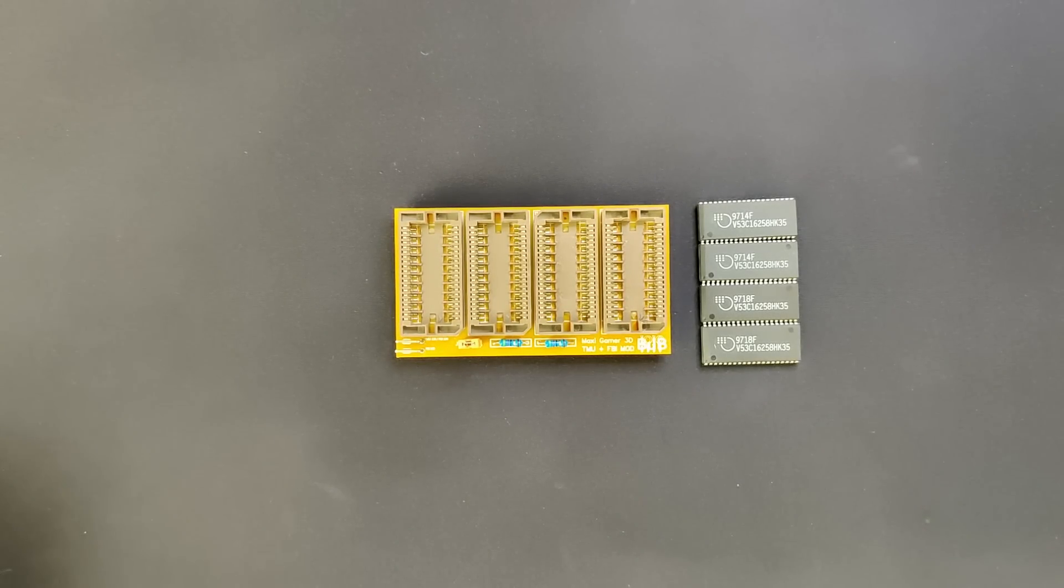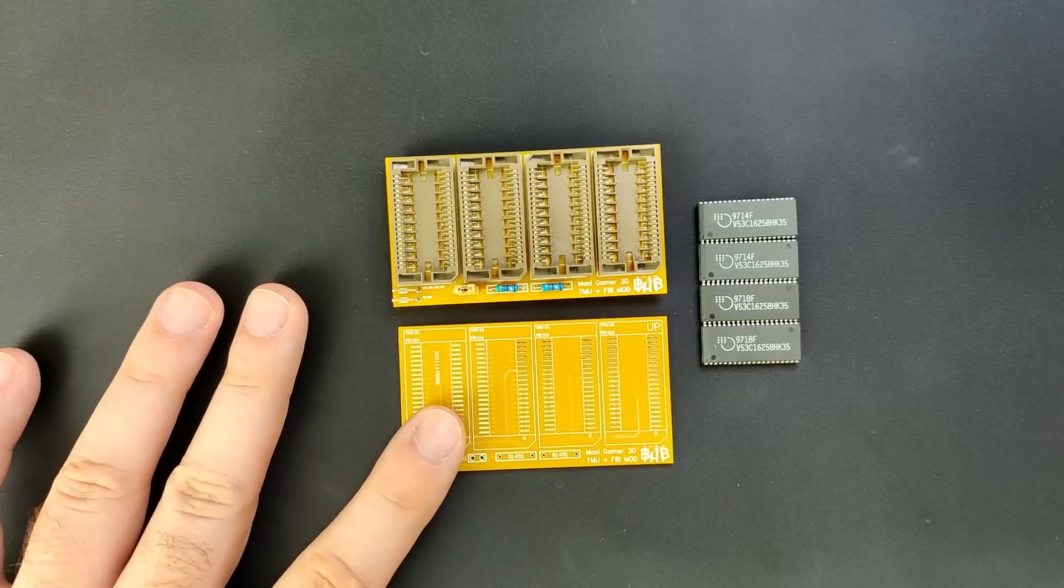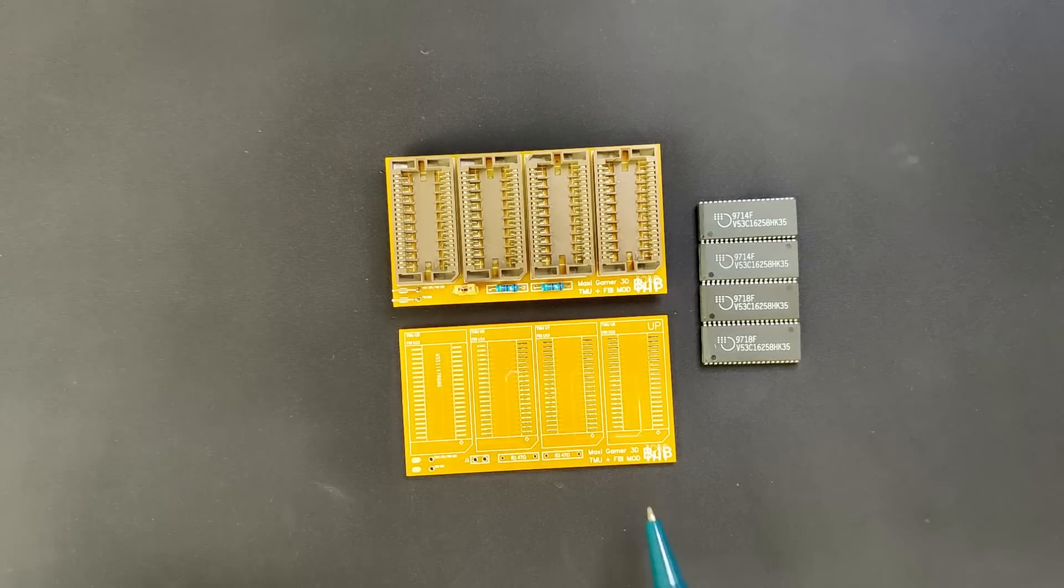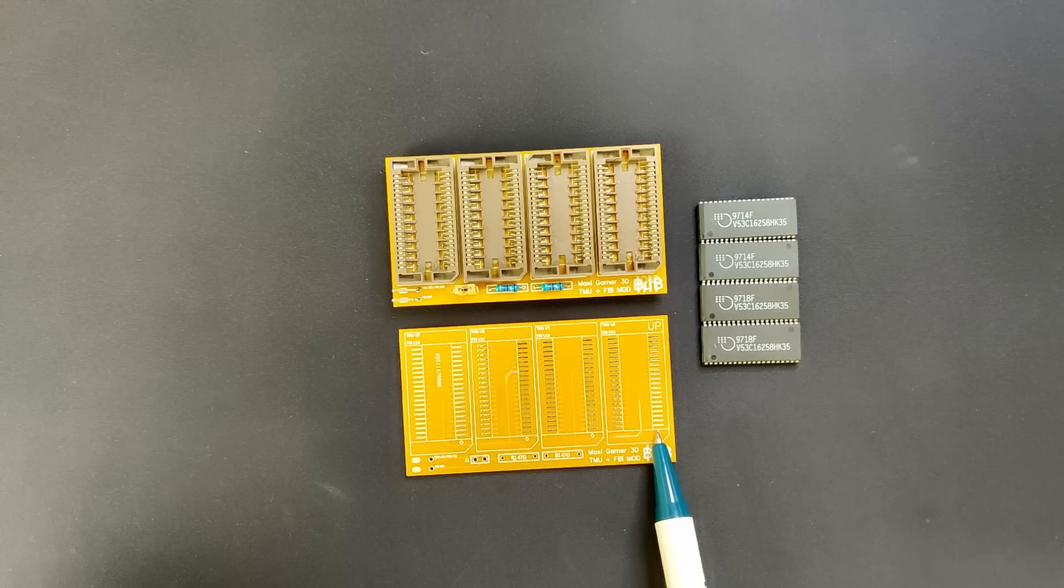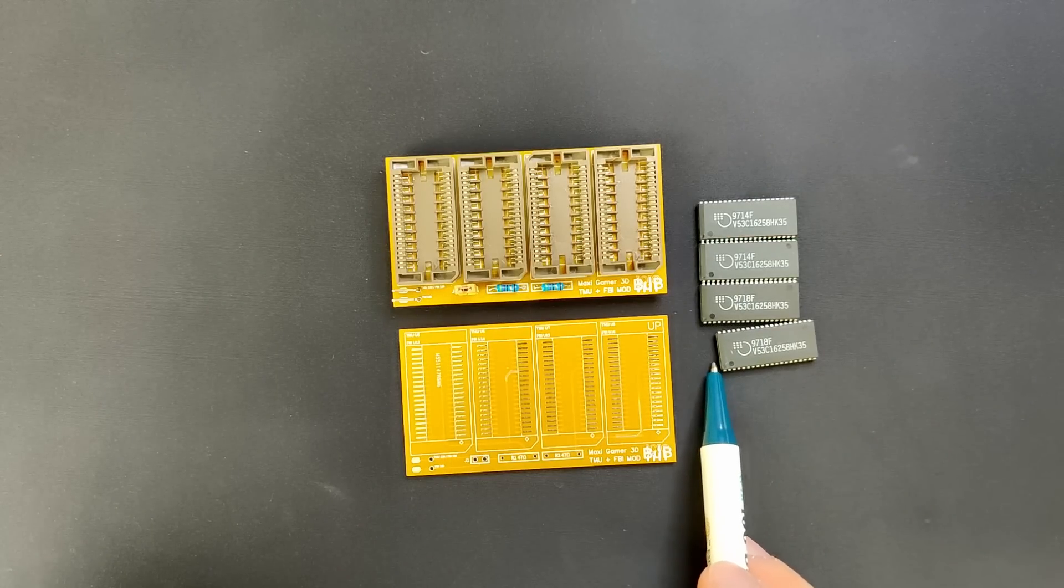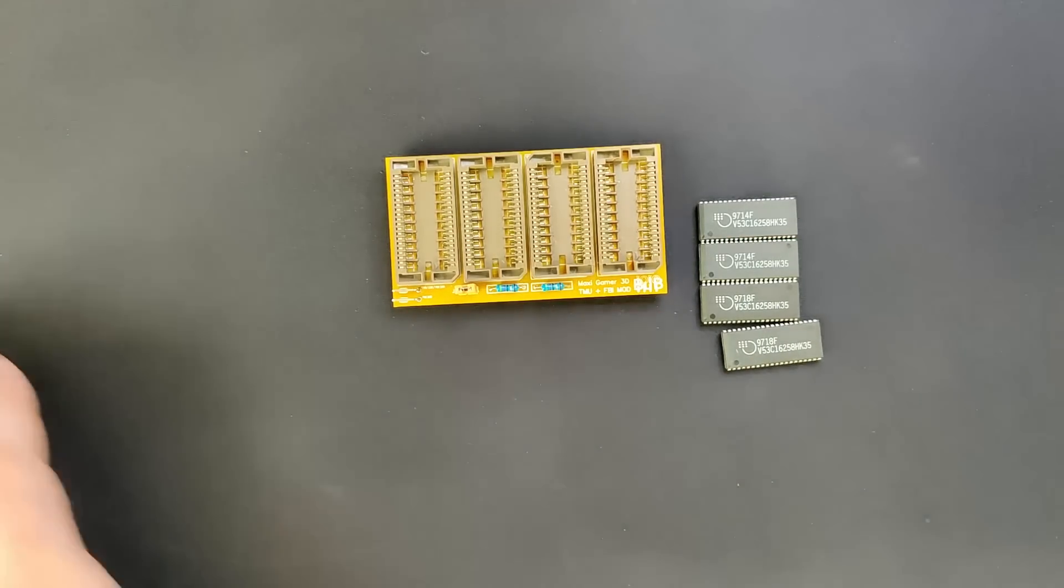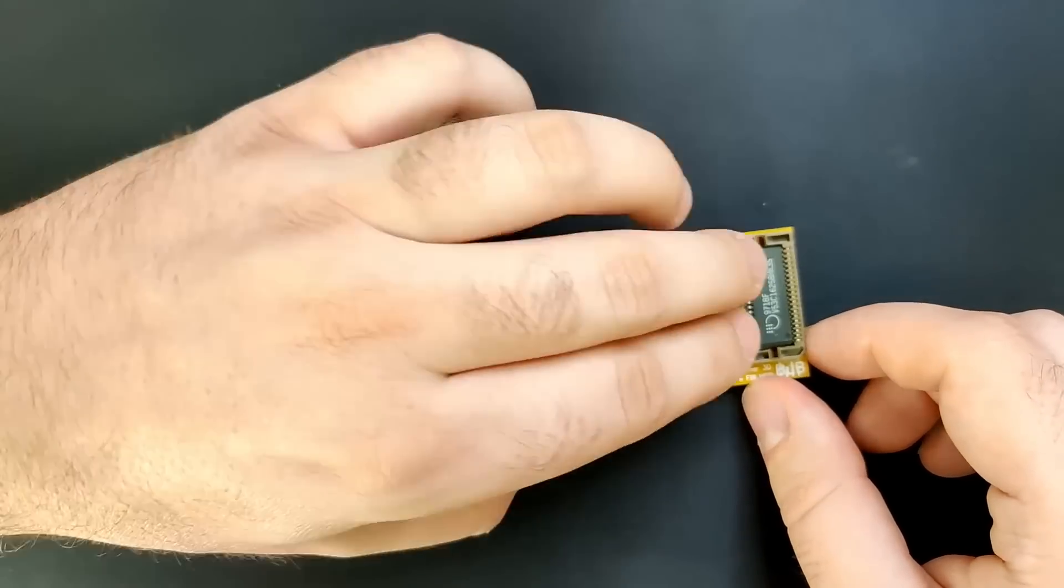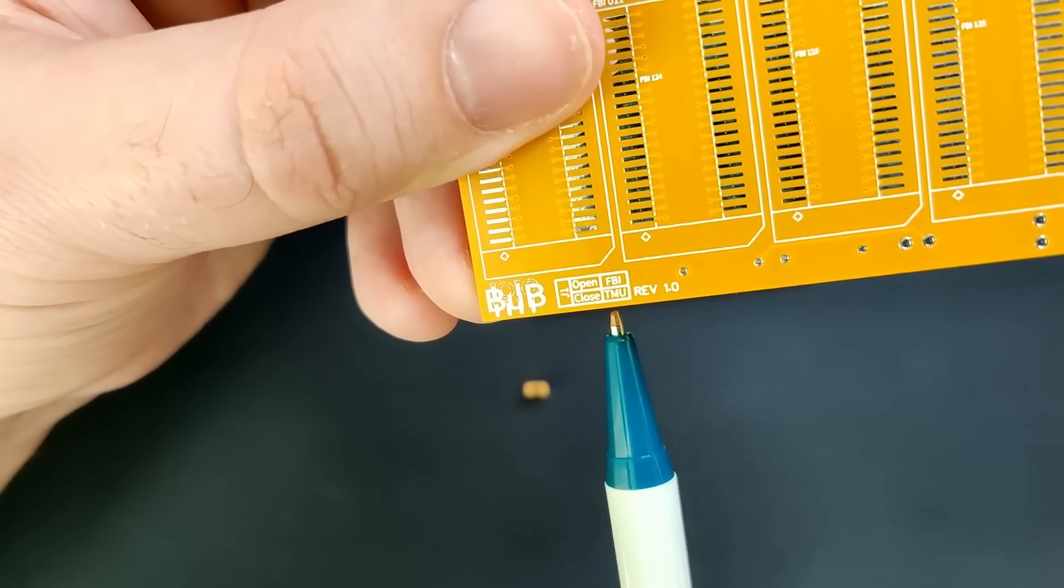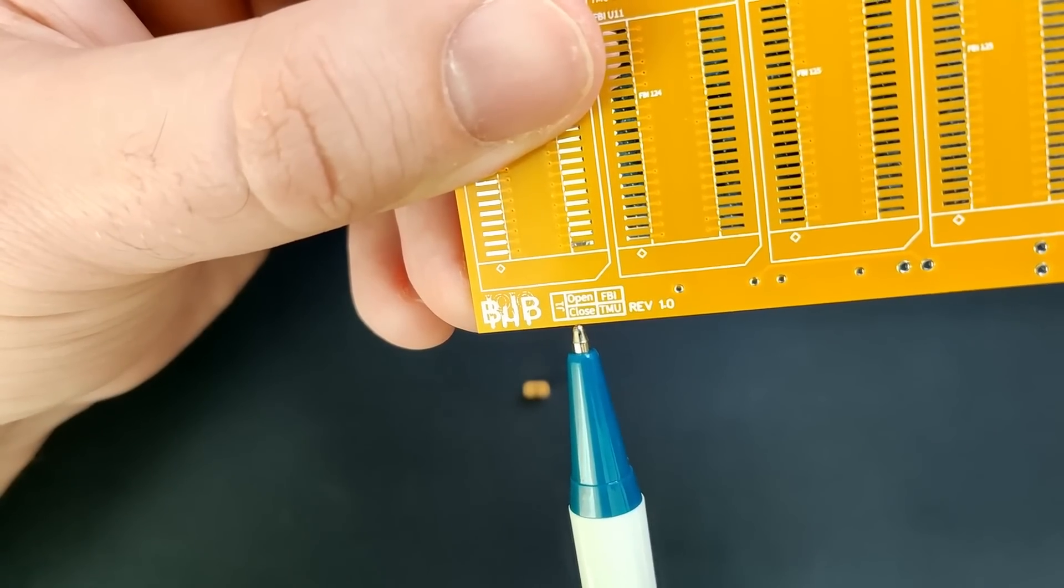Now it's time to install the memory into the sockets. We piggyback the additional memory chips on top of the existing memory. Therefore, we need to make sure that we place the memory chips into the sockets with the right orientation. A small circle on the PCB indicates where pin 1 is located. If you look at the memory chips on the Voodoo card, you will also see a small dot on one edge. The same you can see on the new memory chips. Those dots need to align. And one more time. We need to make sure that we are in TMU mode. We have to short Jumper J1 by closing it with a jumper bridge.